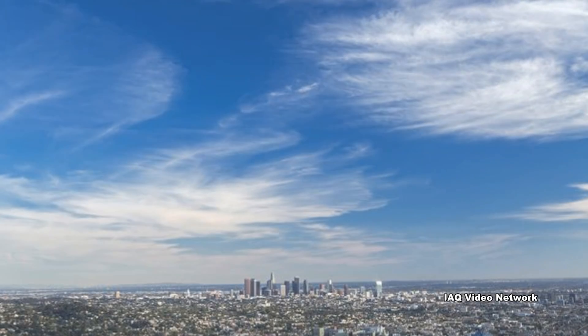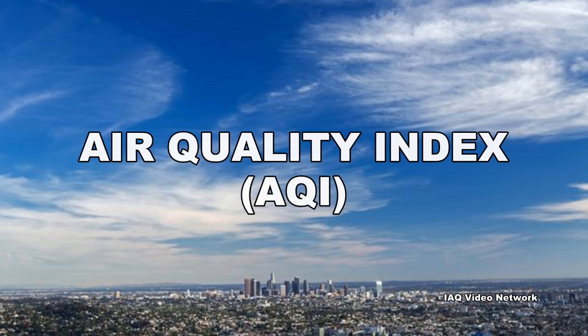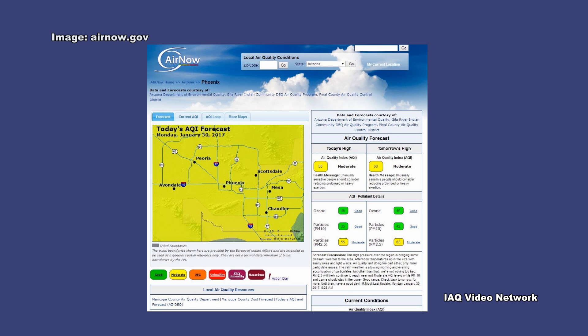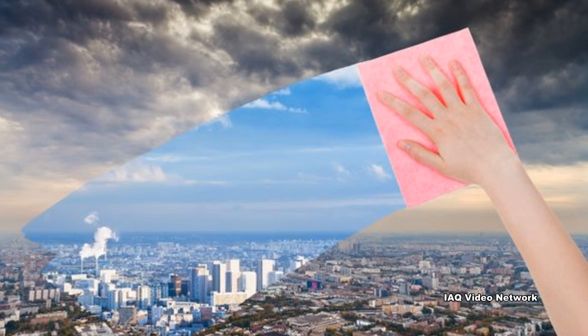In the United States, the Environmental Protection Agency has developed an Air Quality Index, also known as the AQI, which is used to report daily air quality conditions. It is a tool used by various agencies to provide the public with timely and easy to understand information on local air quality and whether air pollution levels pose a health concern.